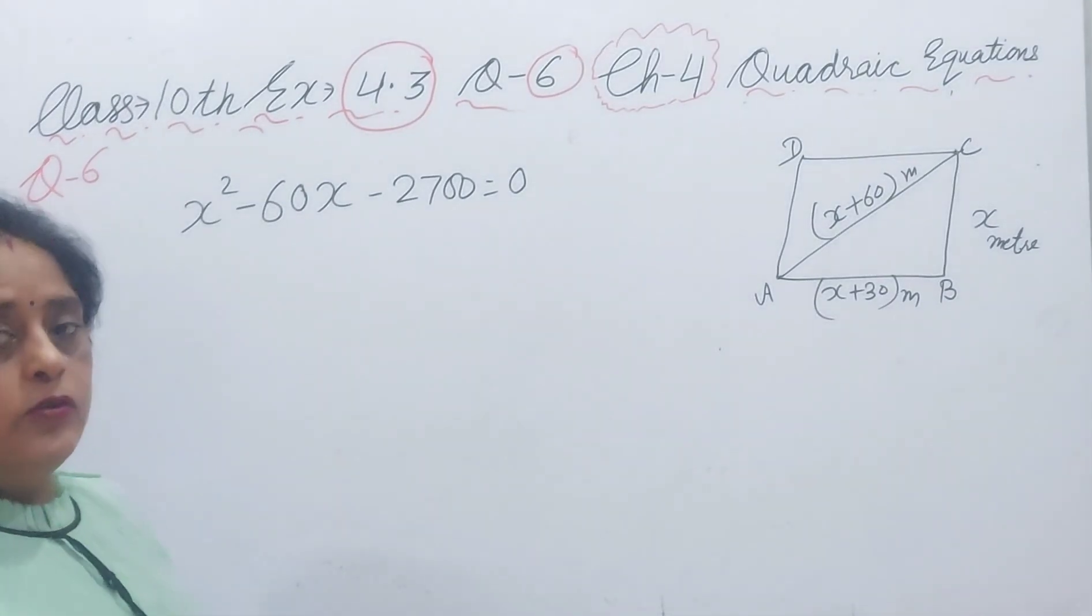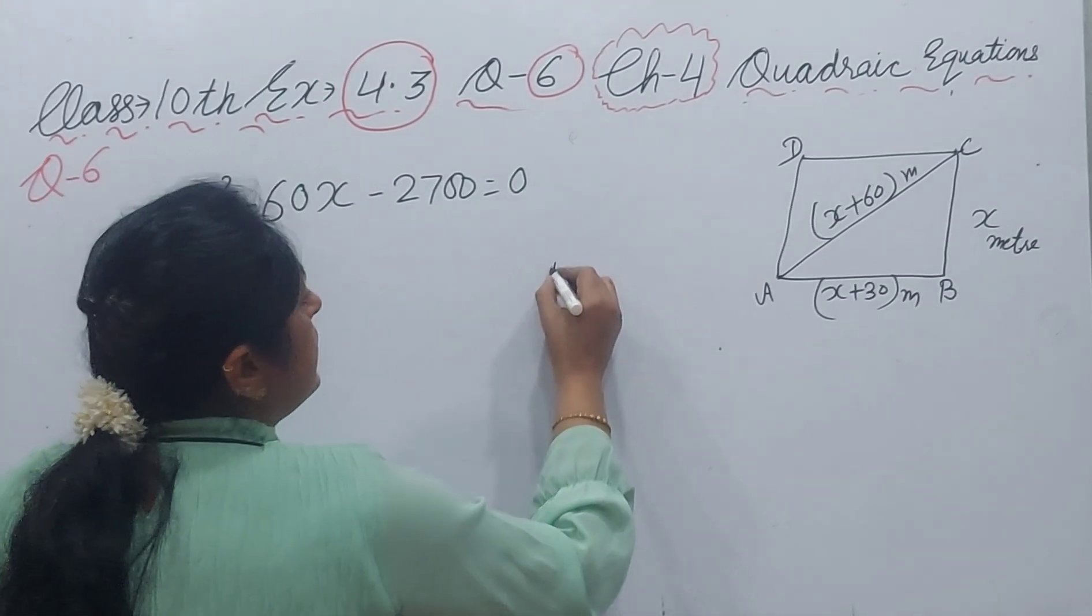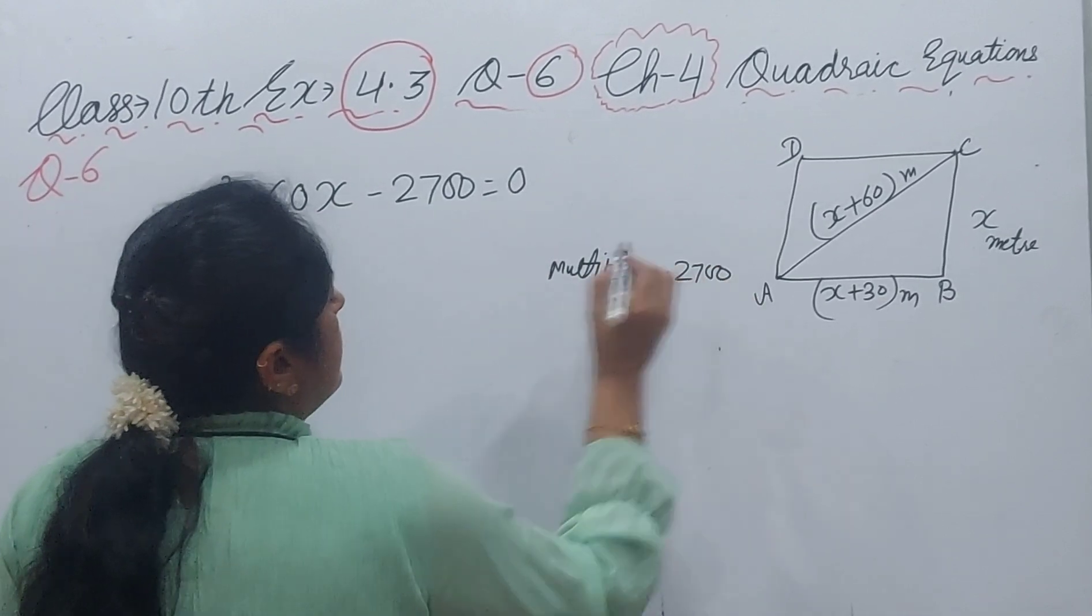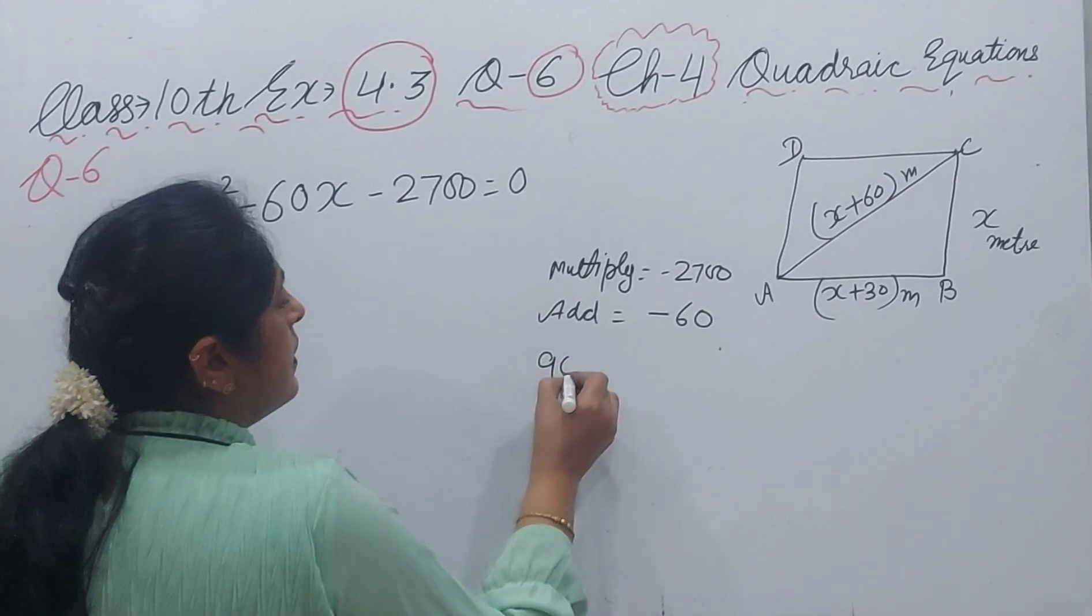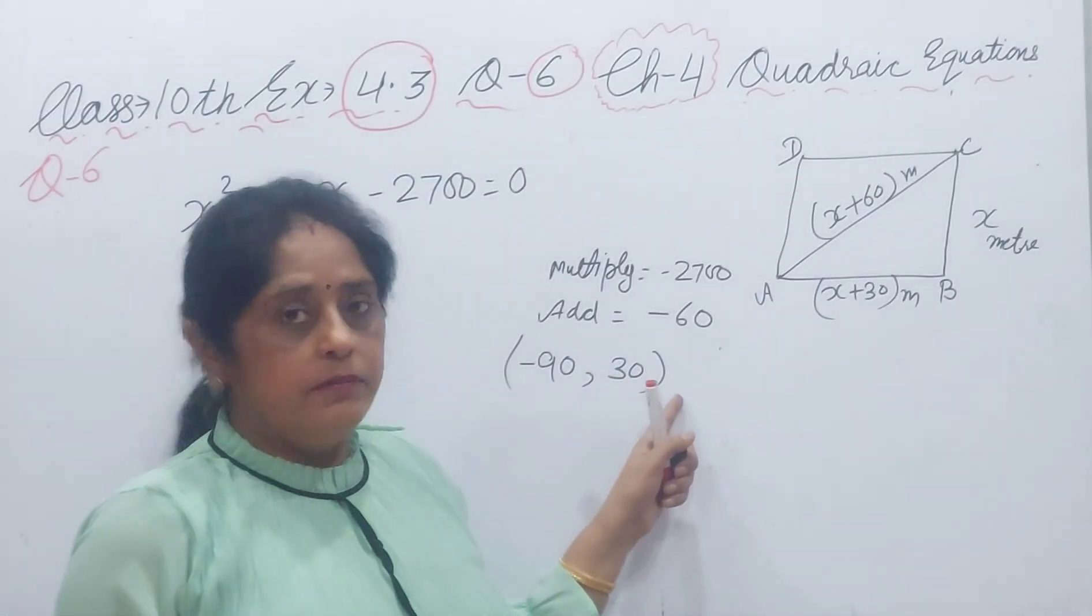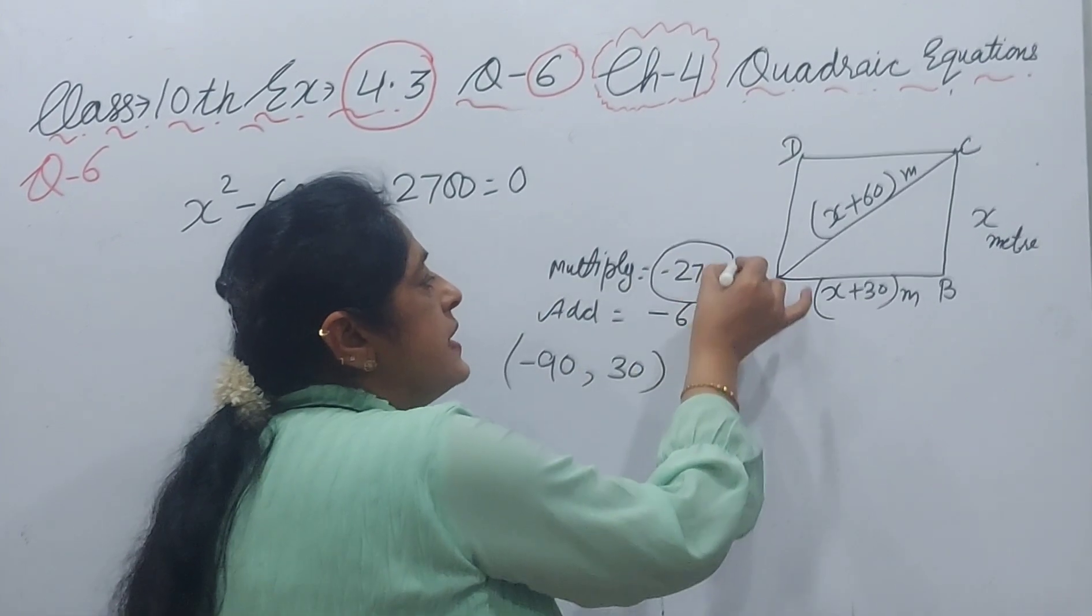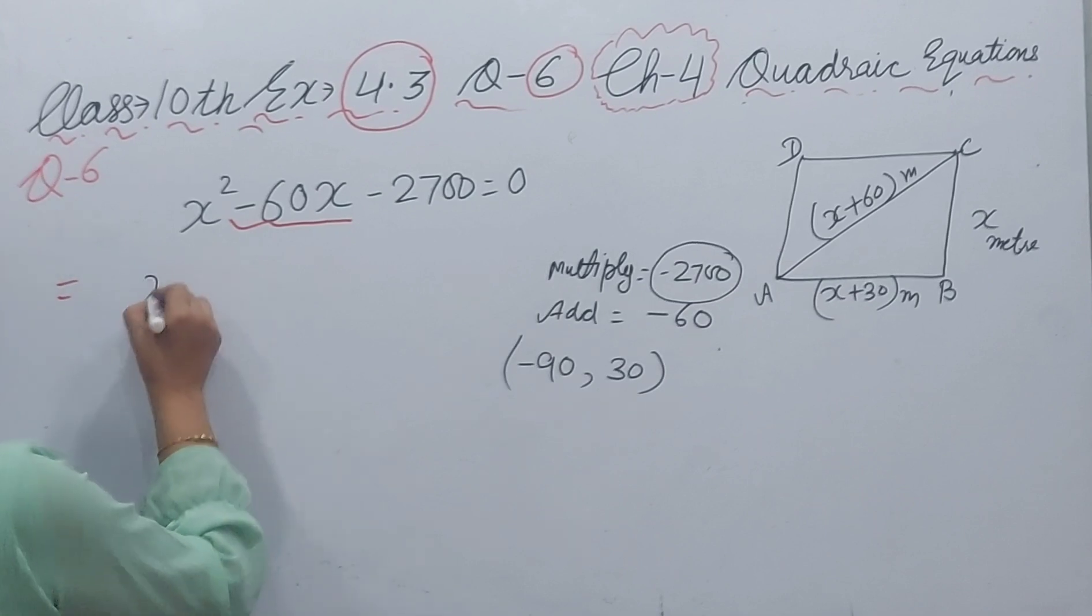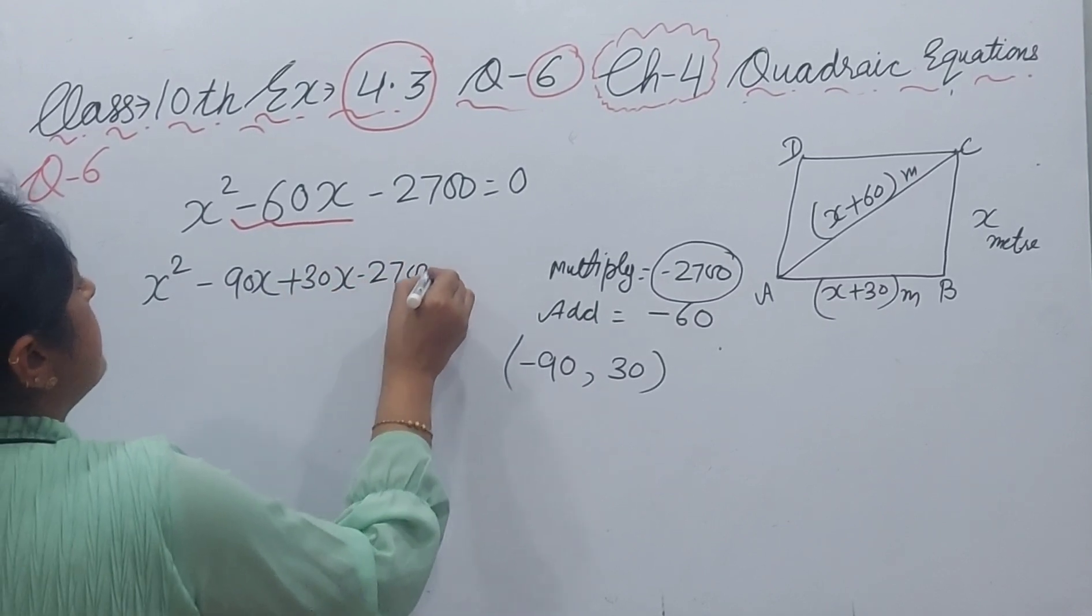It is your wish, you can use quadratic formula or you can split the middle term. We have to make factor like that, if we multiply we will get minus 2700, and when we add we will get minus 60. We make pair minus 90 and plus 30. When you add minus 90 and 30, minus 60, and when you multiply minus 90 multiply minus 30, minus 2700. So split this middle term minus 60 as minus 90X plus 30X minus 2700 equal to zero.